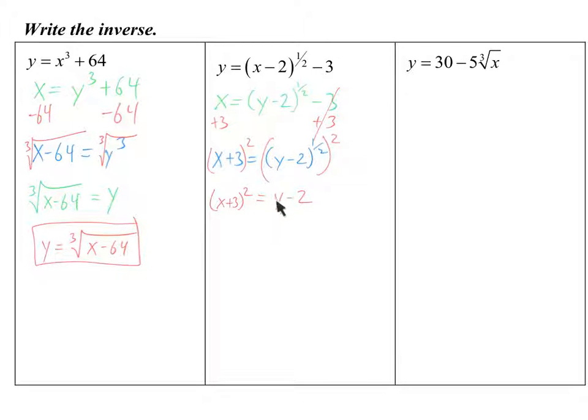So you're left with that. So y is not completely by itself, so I have to get rid of this minus 2. So the opposite of minusing 2 is adding 2. So my final answer is y equals, we have the x plus 3 squared, and we have a plus 2. That right there is the inverse of this.